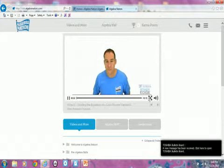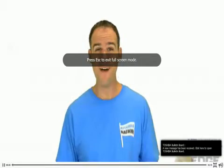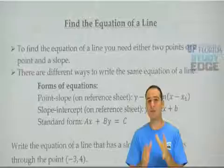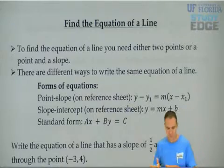Here we're going to start finding the equations of lines. To find them, you need either two points or one point and one slope.